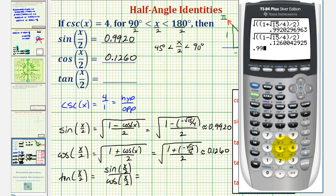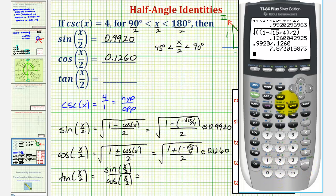And we can find this quickly on the calculator. We'd have 0.9920 divided by 0.1260. So the approximate tangent function value of x over two would be 7.8730.